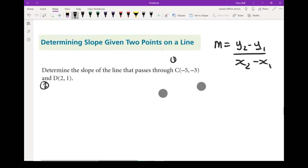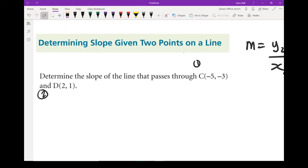What that means is, as I zoom in, this is going to be x1 and y1, and this is going to be x2 and y2. So that's the x value of the first point and the y value of the first point, and the x value of the second point and the y value of the second point.